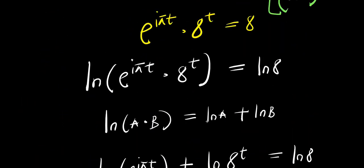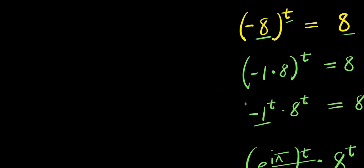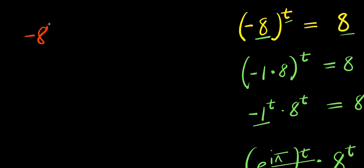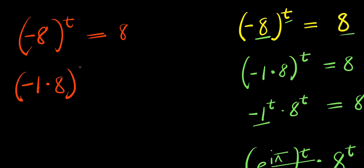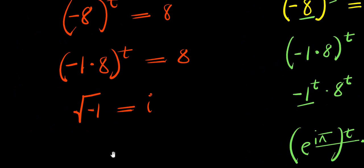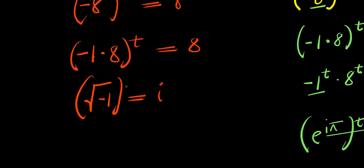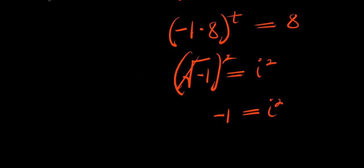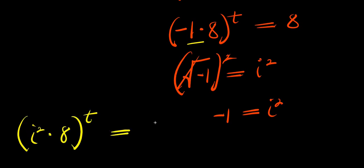Now let's consider a second approach, where negative 1 equals i squared. So we have negative 1 times 8 power t equals 8. Since the square root of negative 1 equals i, taking the square gives negative 1 equals i squared. So substituting, I have i squared times 8 power t equals 8.